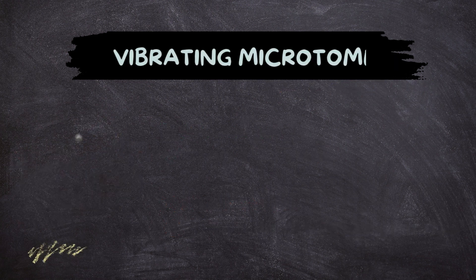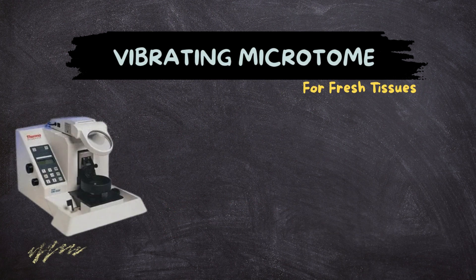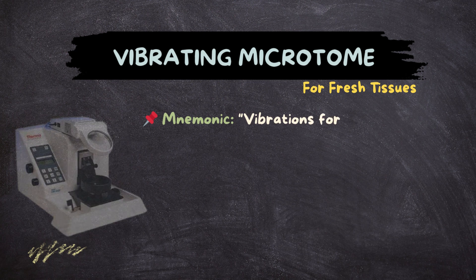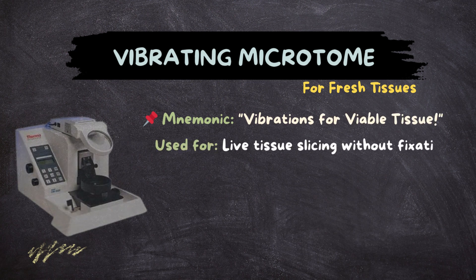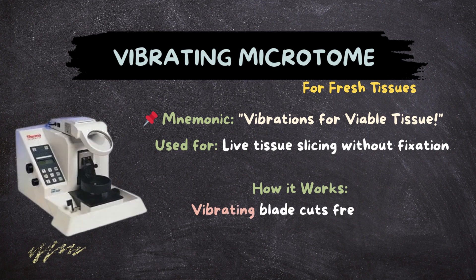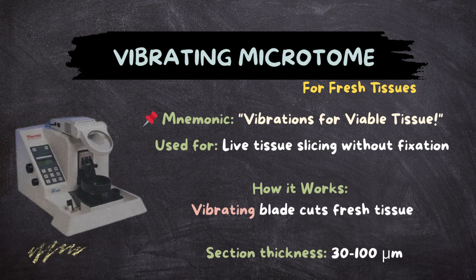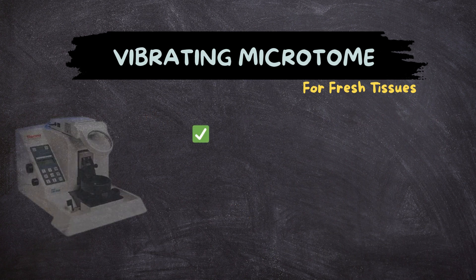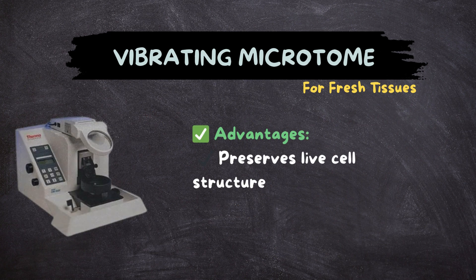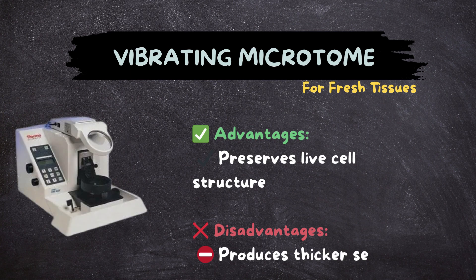Vibrating Microtome — for fresh tissues. Mnemonic: 'Vibrations for viable tissue.' Used for live tissue slicing without fixation. A vibrating blade cuts fresh tissue. Section thickness: 30 to 100 micrometers. Advantages: preserves live cell structure. Disadvantages: produces thicker sections.